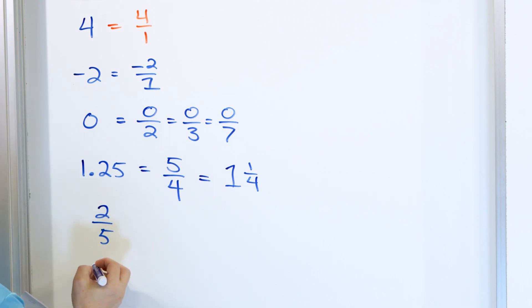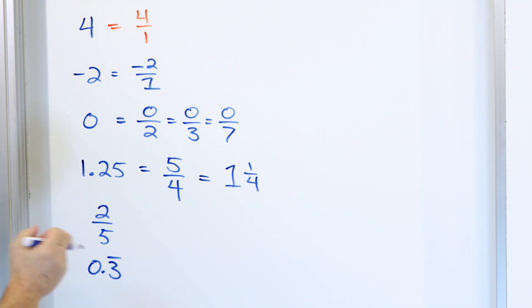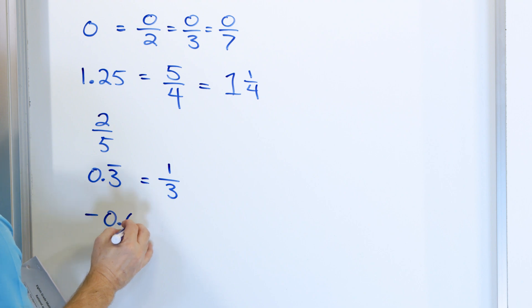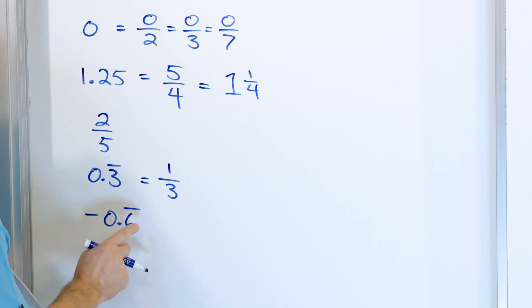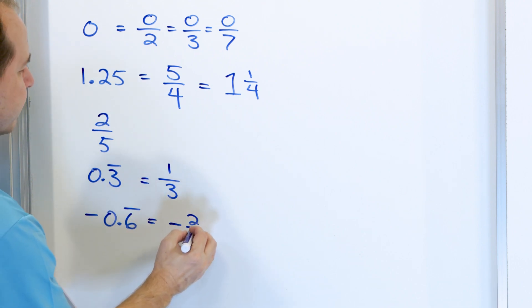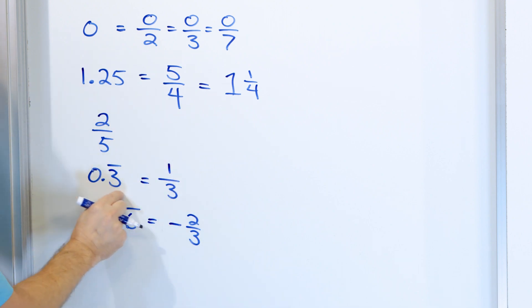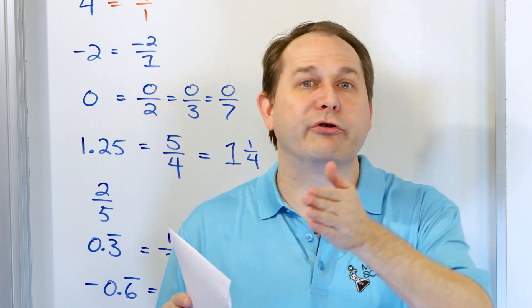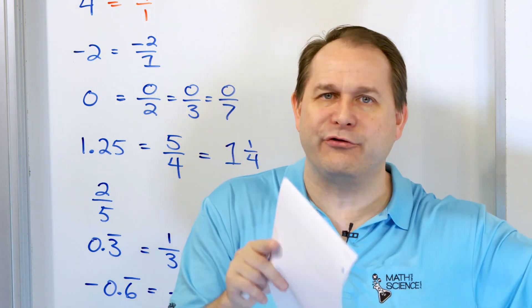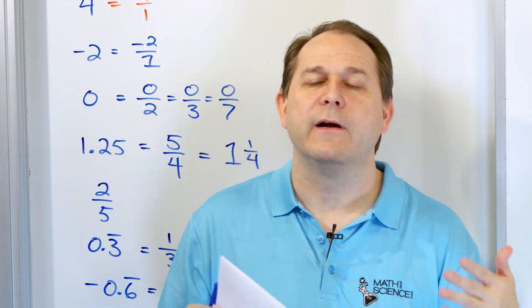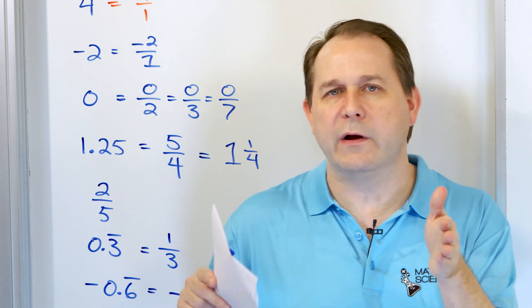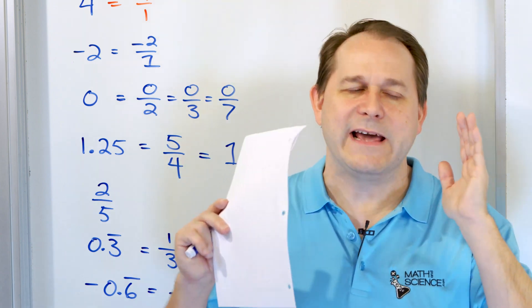What about 0.3 with a repeating bar? This is 0.333333... You might think that's not rational, but actually this decimal can be written as one-third. What about negative 0.6 with a repeating bar? That's negative 0.6666... and you can write this as negative two-thirds. So some of these decimals that go on and on forever can be written as fractions. Here's the rule: if the decimal stops, it can be written as a fraction. If the decimal goes on forever but has a repeating pattern — like 0.333... or even 0.123123123... — if there's a pattern, it can be written as a fraction.